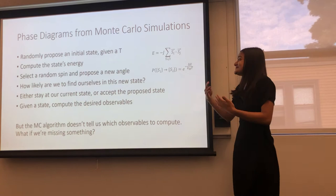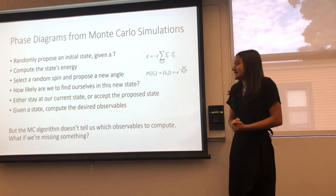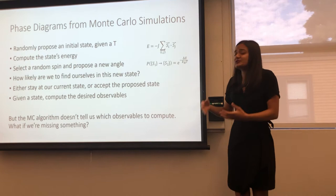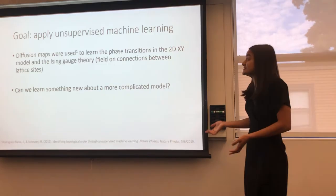And then if you repeat this process many, many, many times, eventually you'll end up with a bunch of statistically independent samples. And finally, if you repeat that a bunch of times at different temperatures, you'll be able to sample the entire phase space of the system. But the problem with the Monte Carlo algorithm is that it doesn't tell you what quantities to compute. So after you get all these samples, you can do things like compute the magnetization or the susceptibility or whatever you want. And you can observe if there's a peak or some sort of transition that happens. But what if we're missing something? What if we're not looking at the right quantities? And so this is where the goal of applying unsupervised machine learning comes in.